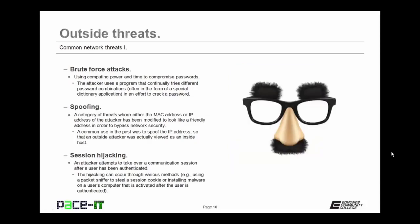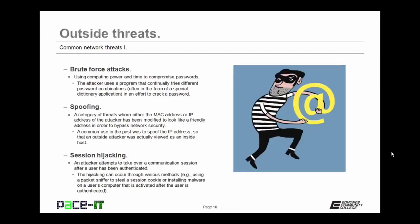Then there's spoofing. This is a category of threats where either the MAC address or the IP address of the attacker has been modified to look like a friendly address in order to bypass network security. A common defense against IP address spoofing is an ACL rule that doesn't allow an inside IP address to come from outside of your network. Then there's session hijacking. An attacker attempts to take over a communication session after a user has been authenticated. The hijacking can occur through various methods, as in using a packet sniffer to steal a session cookie or installing malware on a user's computer that is activated after the user is authenticated.